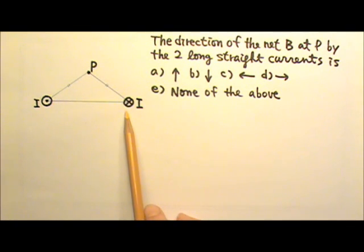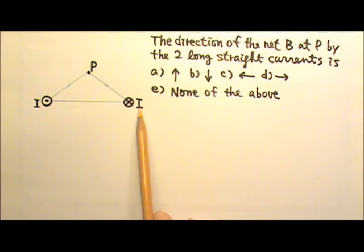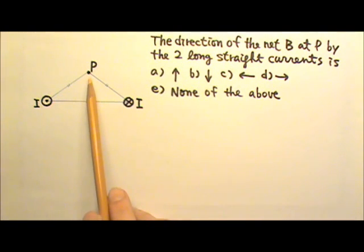Two long straight currents are at two corners of an isosceles triangle. Find the direction of the net magnetic field produced by these two currents at point P.